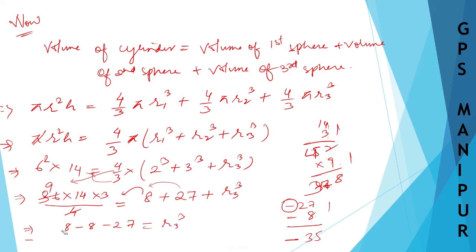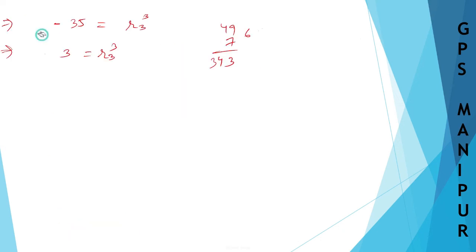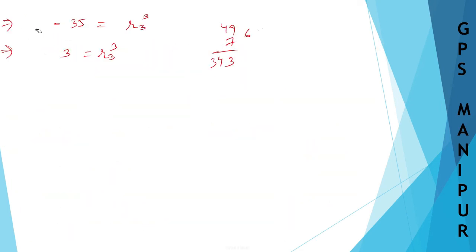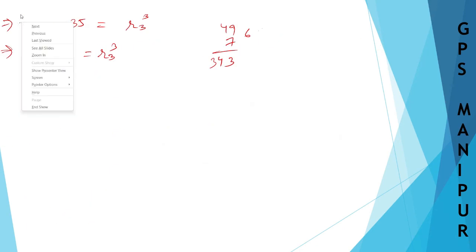There was a small multiplication mistake earlier — sorry for that. Even we make mistakes; don't worry when you do too. The correct result is 378.